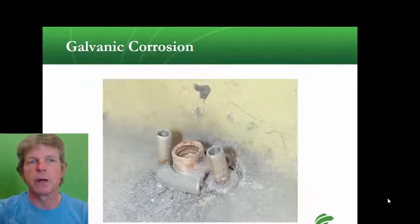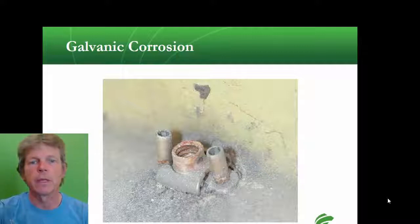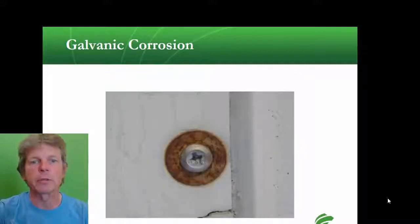Here's a picture of galvanic corrosion. This is dissimilar metals: steel fasteners on aluminum. You can see that there's a buildup—this is the cathode that's receiving particles.